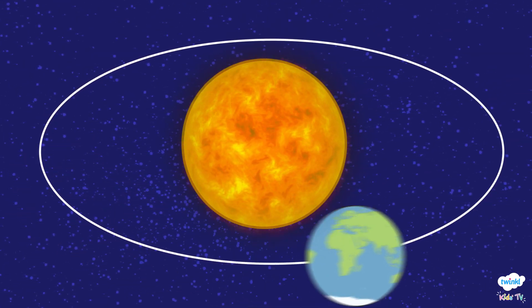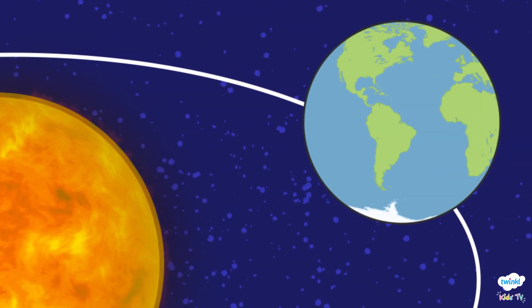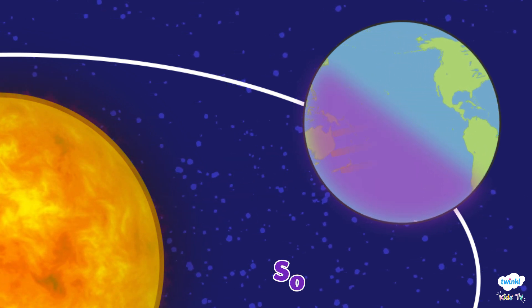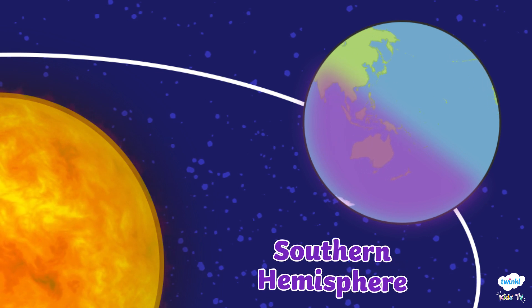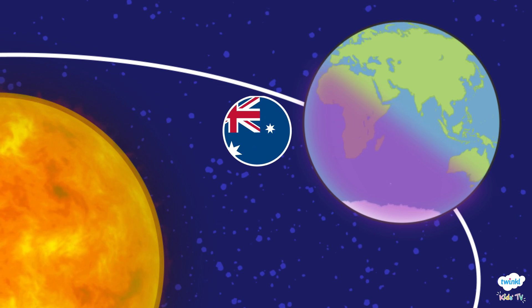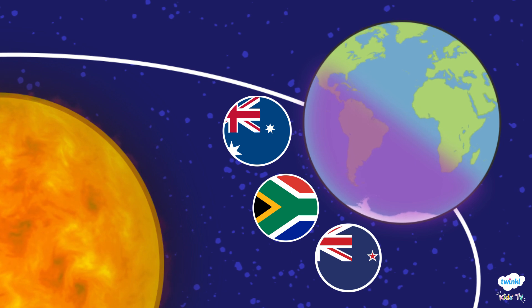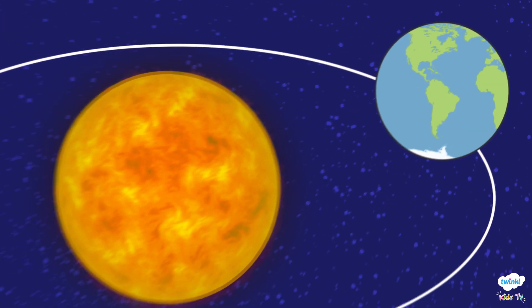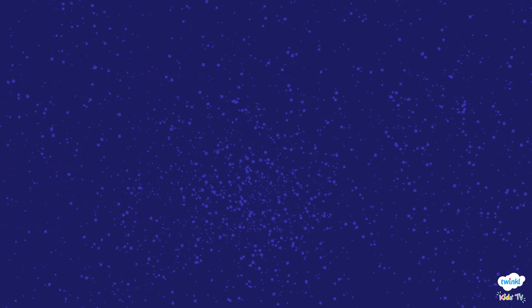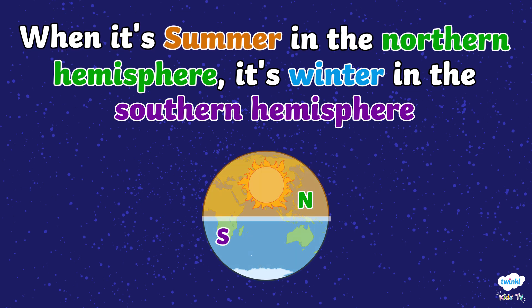But later in the year, the North Pole is tilted away from the Sun, with the South Pole closer. This means it's summer in the Southern Hemisphere. When it's summer in the Northern Hemisphere, it's winter in the Southern Hemisphere.